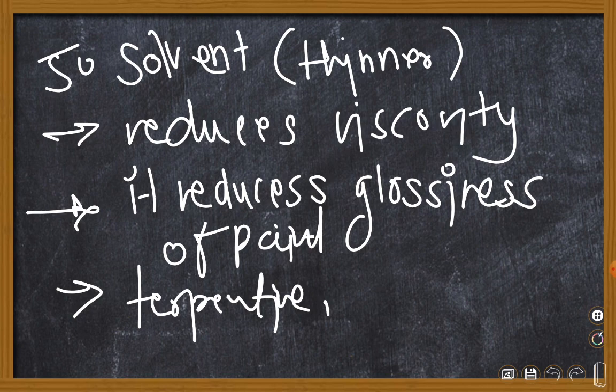These were the constituents of a paint. It was base that forms the bulk or base of paint. Then vehicle, keeps the paint mass in suspension. Then dryer, accelerator for the process of drying. Then pigment, to impart the desired color. And solvent, that reduces viscosity for making application of paint easy. I hope you learned something new regarding constituents of paint.